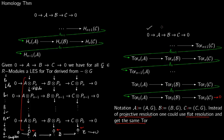To summarize: you form complexes from the projective resolution of G, and the complex structure of that resolution is carried over to the complexes tensored with A, B, and C. That is how you obtain the Tor groups and the long exact sequence.